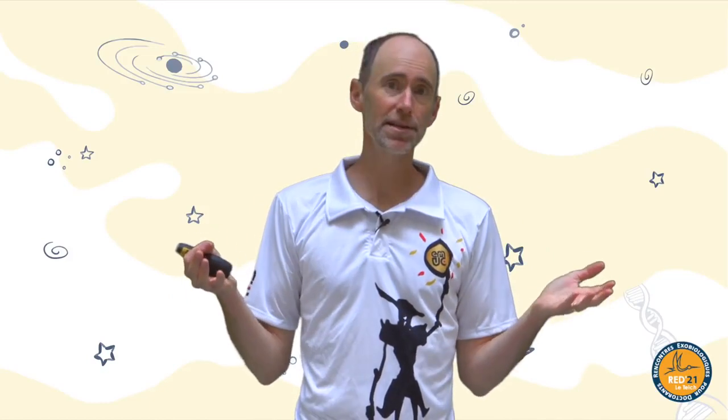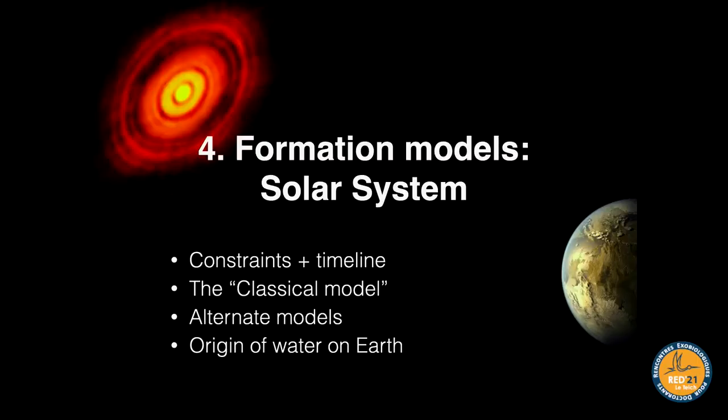For gas giants, the disk instability model can work for wide orbits of very massive planets, though it's unclear whether those planets survive. The core-migration-accretion scenario works reasonably well, with the main difficulty being keeping planets on wide orbits. Planet-planet scattering works very well for matching the eccentricity distribution, emphasizing that dynamical instability is probably a really important process in planetary systems in general.